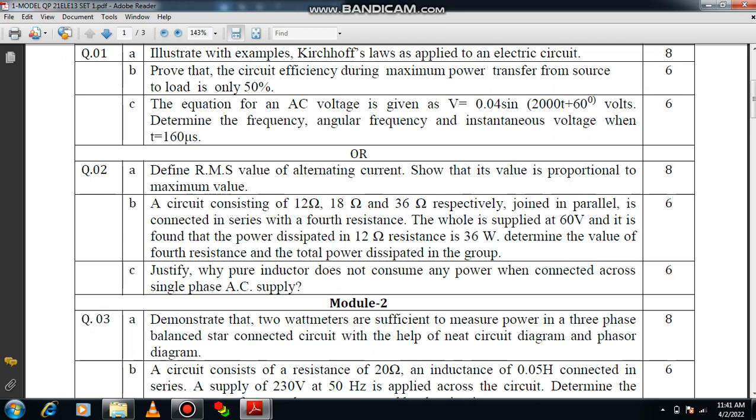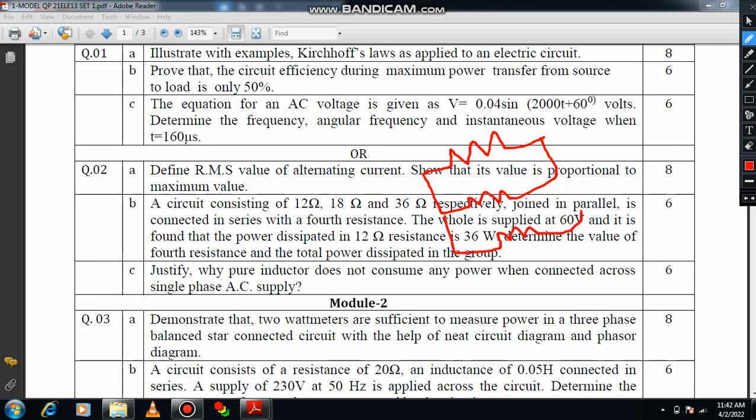Sub question 2: The circuit comprises 12 ohm, 18 ohm, 36 ohm respectively joined in parallel, then connected in series with a fourth resistance. The whole is supplied at 60 volt and it is found that power dissipated in 12 ohm resistance is 36 watts. First, you have to draw the circuit. Three resistors all connected in parallel.